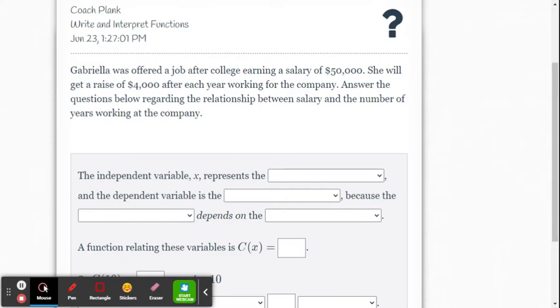Here's our next example. Gabriela was offered a job after college earning a salary of $50,000. She will get a raise of $4,000 after each year working for the company. Answer the questions regarding the relationship between salary and the number of years working at the company.